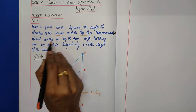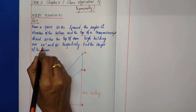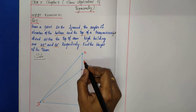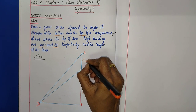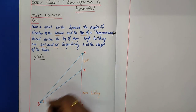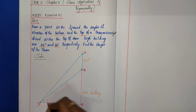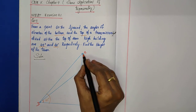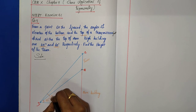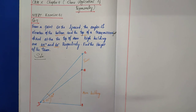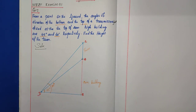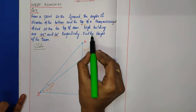The transmission tower is fixed at the top of the 20 meter high building. The elevation of the bottom of the tower is 45 degrees and the elevation of the top of the tower is 60 degrees. Our aim is to find the height of the tower.